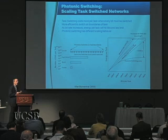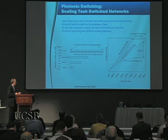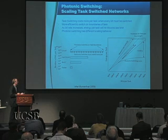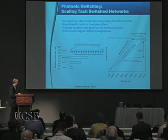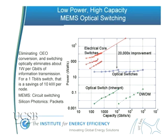As we go from today's arrays of processors and servers to exascale systems, this becomes extraordinarily important in terms of how processors communicate. There are various electronic technologies for switching and various optical switching approaches, whether MEMS or Mach-Zehnder interferometers, with something like 20,000 times less power per bit required to switch.